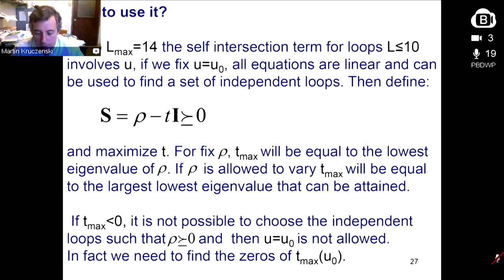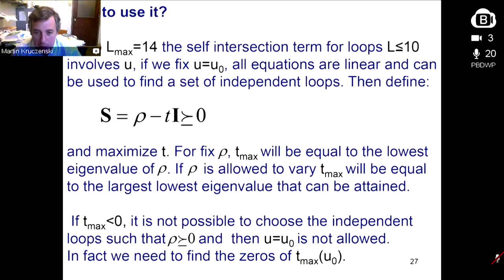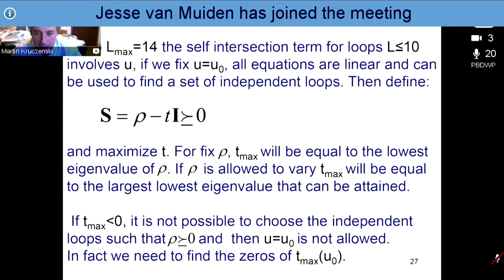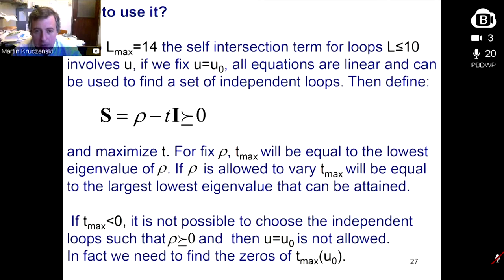With loops up to length 14, we have only one free dimensional parameter space to explore. We define matrix S = ρ - T·I, where T is a new variable, require this to be positive definite using semi-definite programming, and maximize T. If ρ is fixed, the maximum T can achieve is the lowest eigenvalue of ρ. Maximizing T forces the ρ matrix to have the largest possible lowest eigenvalue. If T_max is negative, that value of the plaquette is disallowed — ρ cannot be positive definite for any value of the loops. What you need to find are the zeros of T_max as a function of U, which give the boundary of the allowed space.